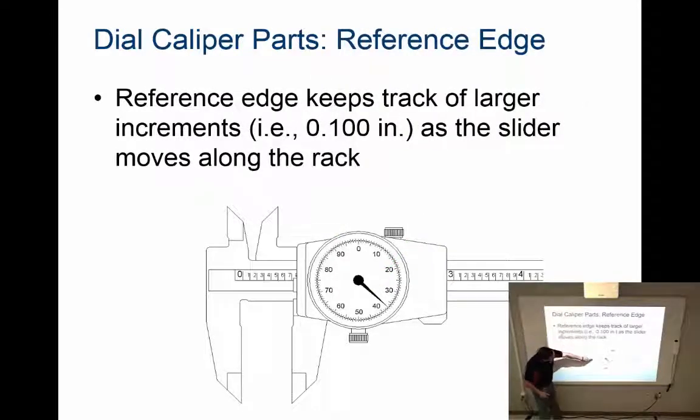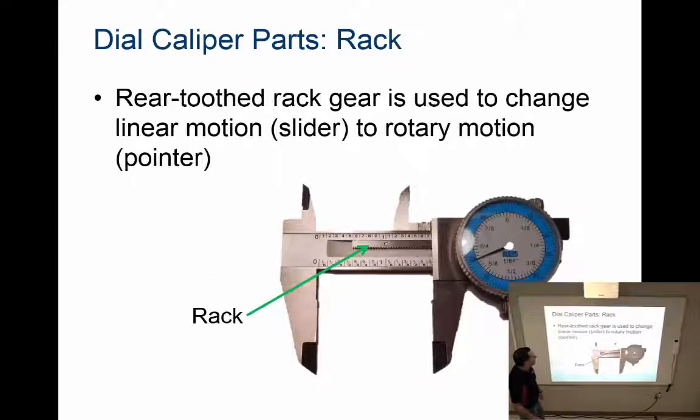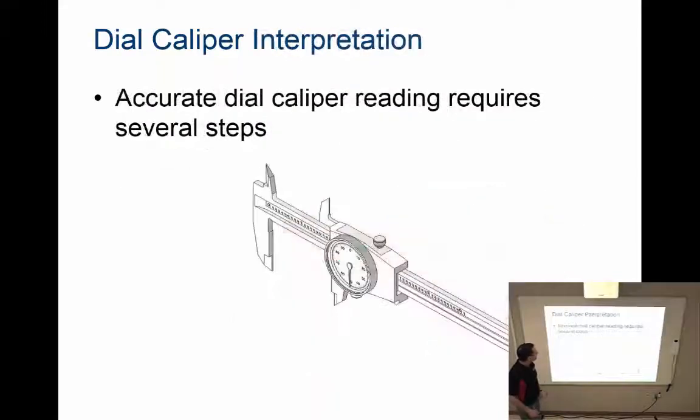The reference edge, which is right here, keeps track of my larger measurements, like whole inches and tenths of an inch. The smaller measurements, the hundredths and thousandths of an inch, are recorded using the face of the dial. This is my reference edge, and I'll use that in an example in just a minute.